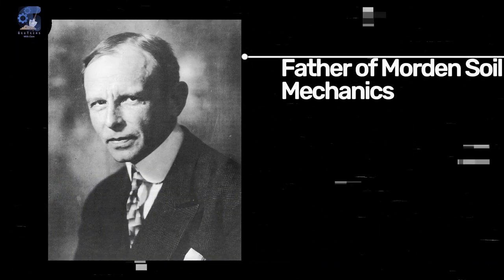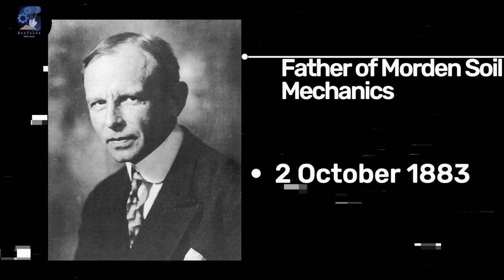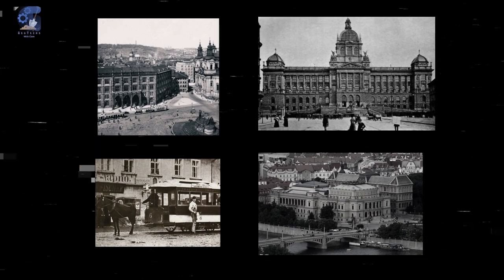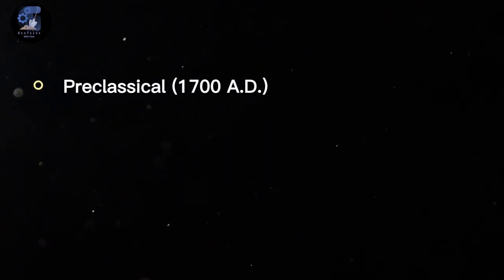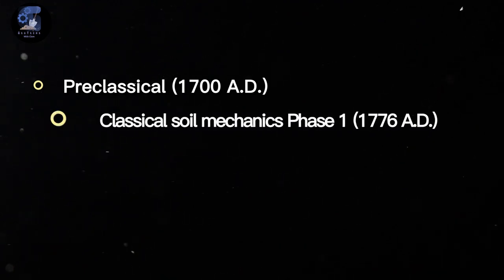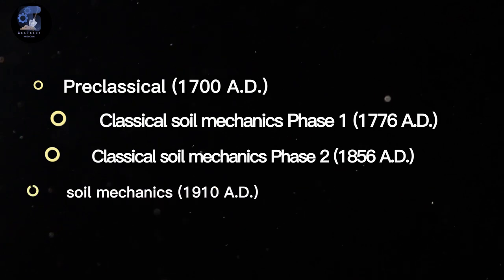Karl Terzaghi, who is regarded as the father of modern soil mechanics, was born on October 2nd, 1883 in Prague, which was then the capital of the Austrian province of Bohemia. Though Terzaghi took the spotlight, some other prominent scientists and engineers came before him. Based on the emphasis and nature of study, the time span from 1700 to 1927 is divided into four major periods: the pre-classical, classical soil mechanics phase one, classical soil mechanics phase two, and modern soil mechanics.